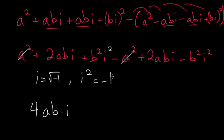And i squared is negative 1, so this is minus b squared. And then over here we have i squared again, so negative 1, but this is a negative, so that would be plus b squared.